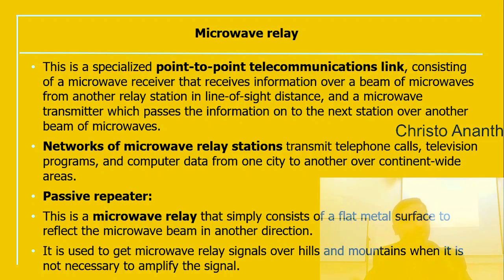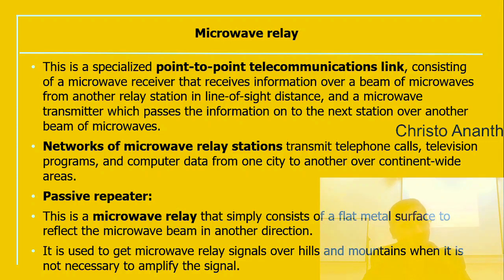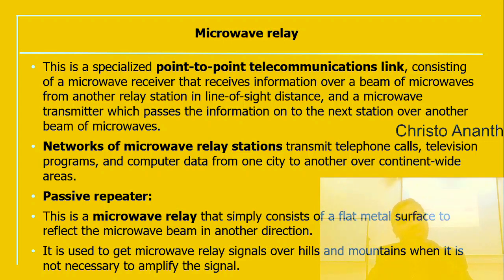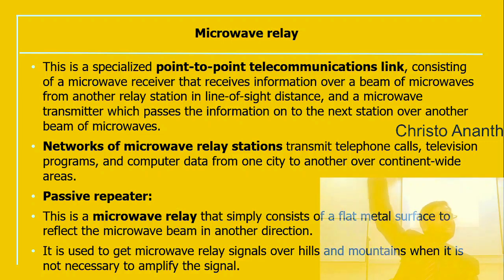A microwave relay is a point-to-point telecommunication link. It has a microwave receiver that receives information over a beam of microwaves from another relay station within line-of-sight (LOS) distance, and a microwave transmitter that passes the information on to the next station over a beam of microwaves. Networks of microwave relay stations transmit telephone calls, TV programs, and computer data from one city to another or across continents. A passive repeater consists of a flat metal surface that reflects the microwave beam in another direction — used to route signals through hills or mountains when amplification is not needed.